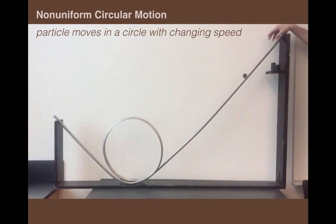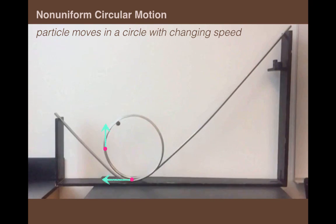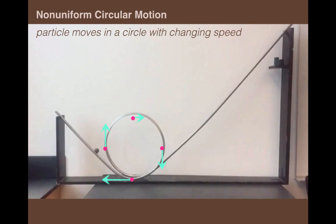Notice how the ball picks up speed as it rolls downhill. It attains its greatest speed when at the low point of the track, slows down on its way back up to the top of the loop, and speeds back up again as it heads back down.